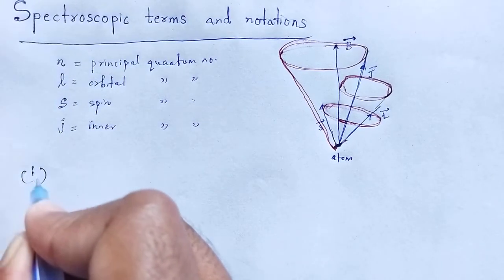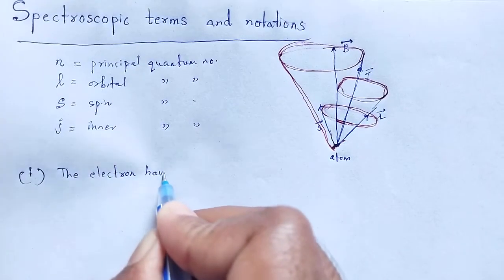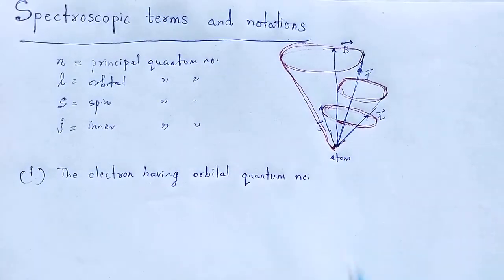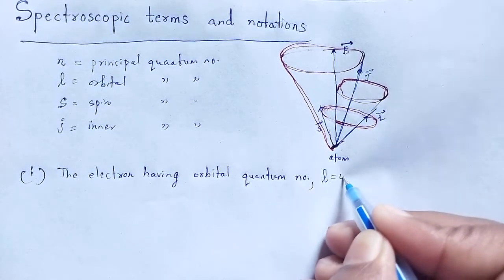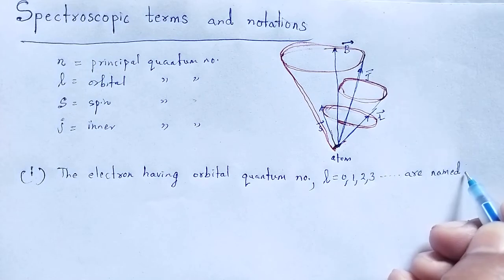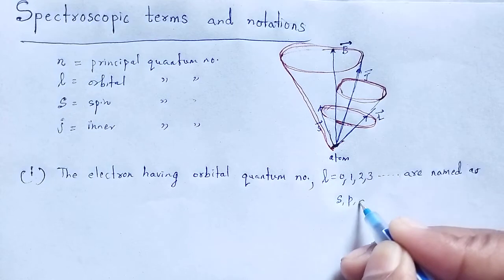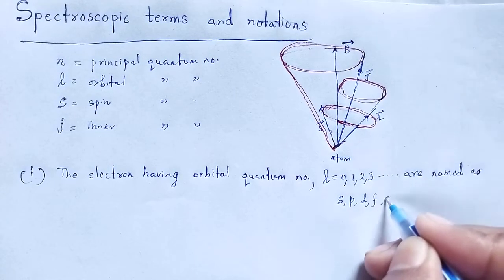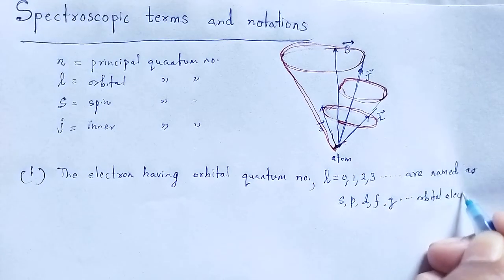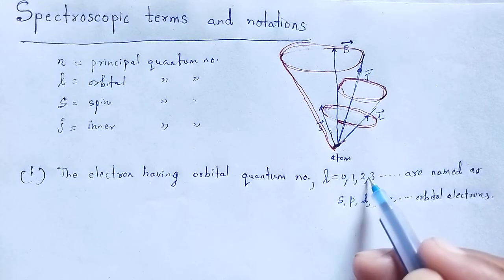Rule number 1: the electrons having orbital quantum number L equal to 0, 1, 2, 3, and so on are named as s, p, d, f, g orbital electrons respectively. So when L equals 0, the orbital electron is designated as s; L equals 1 is p; L equals 2 is d — these are written in small letters.